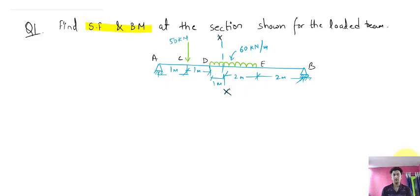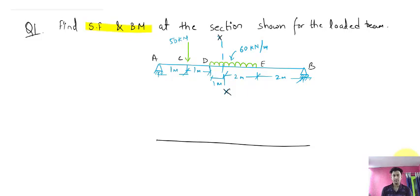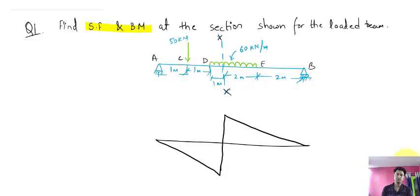For calculating the shear force, you first need to draw the ILD for the shear force. To make the ILD for shear force, first make the span of the beam. At section XX, you have to calculate the shear force, so at that point you provide a unit displacement such that theta equals theta. I am providing a unit displacement here, so the shear force diagram will look like this.